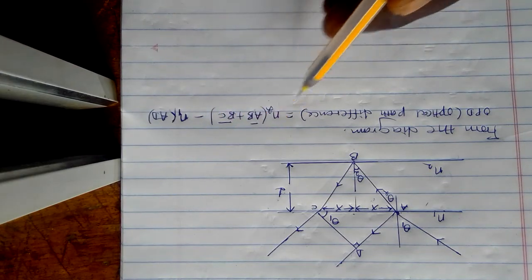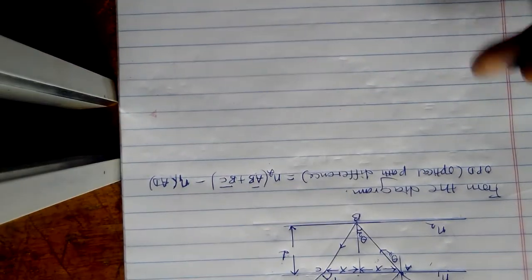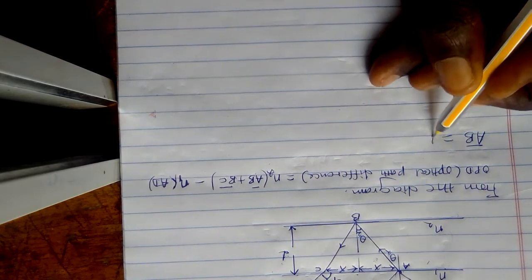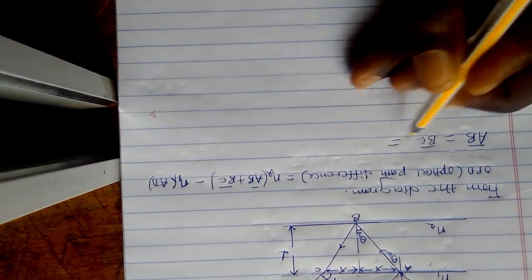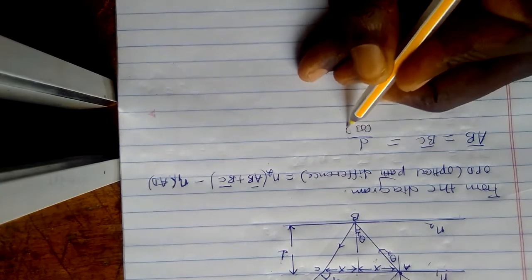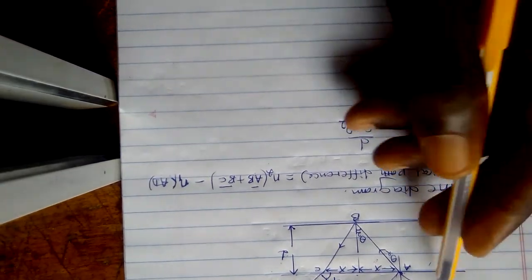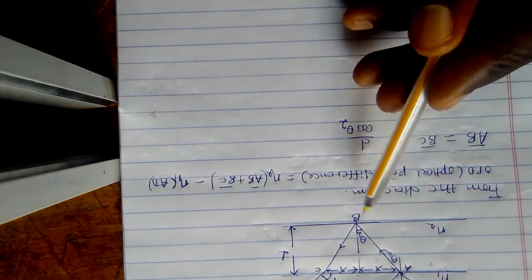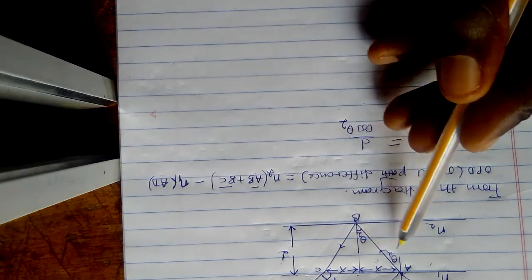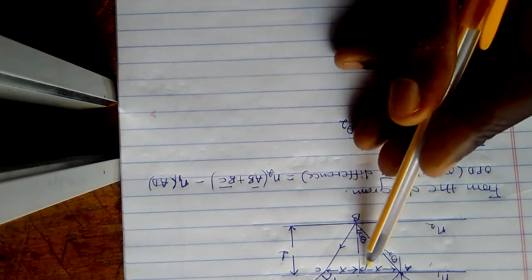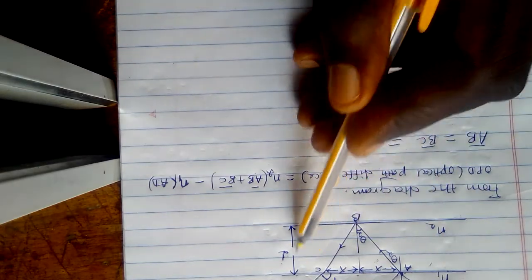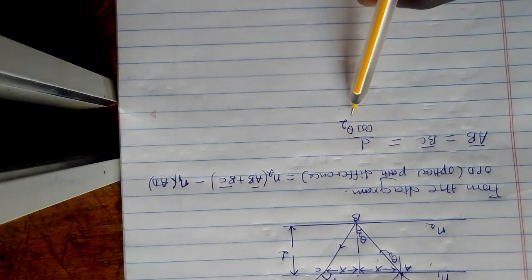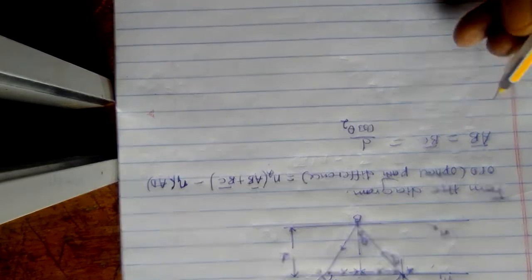Our task is to find AB, BC, and AD, then substitute into the formula. From the diagram, AB is equal to BC, and both are equal to D over cos theta2 — where D is the adjacent side and the hypotenuse gives us that ratio.